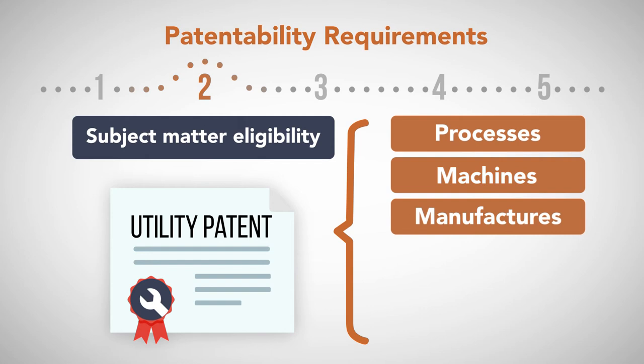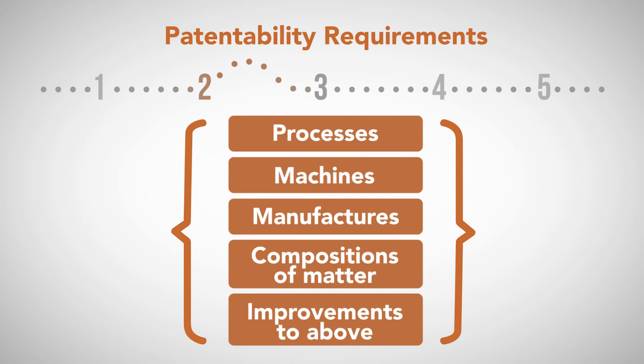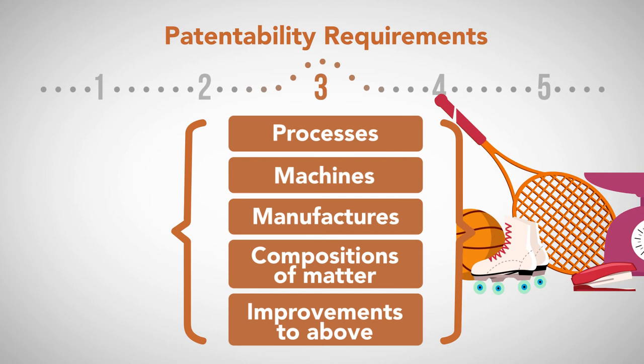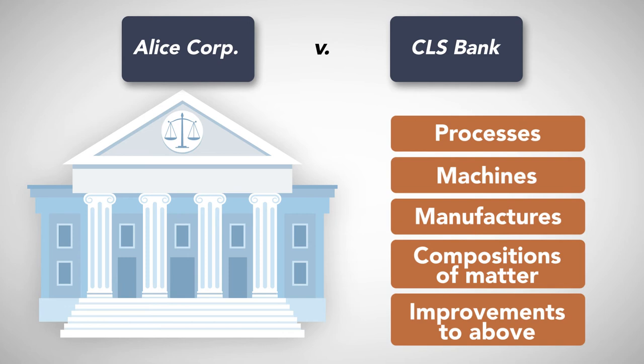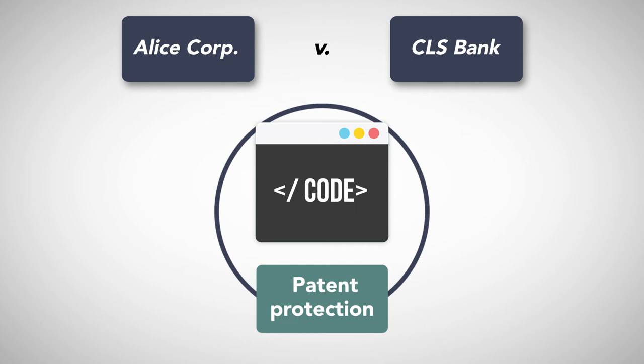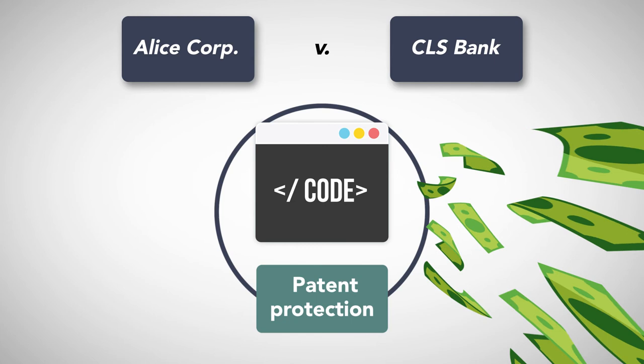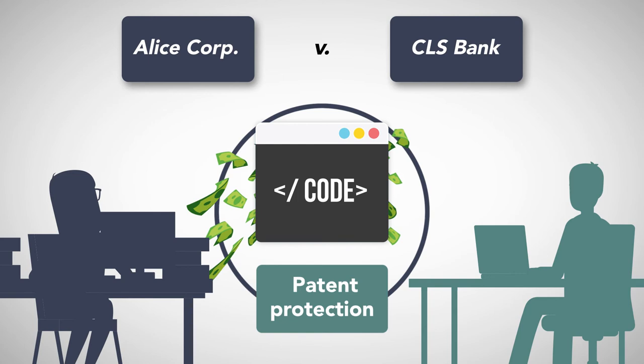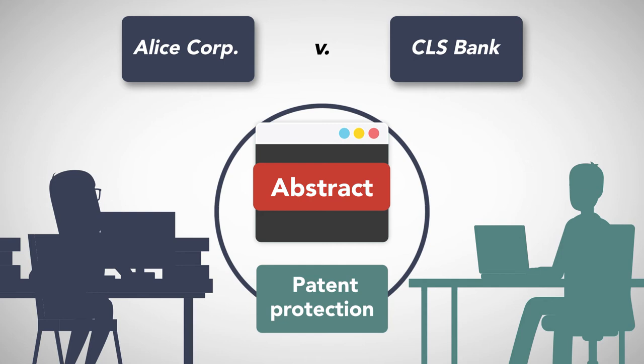For many years, courts read these categories so broadly that almost anything new and useful could be patented. This all changed when the Supreme Court issued its Alice Corp v. CLS Bank decision in 2014. In that case, the Supreme Court significantly limited the scope of patent protection for certain abstract concepts, including many computer software-related ideas. The case addressed patent claims covering a computerized trading platform handling financial transactions in which a third party settles obligations between two others so as to eliminate settlement risk. The court ruled that this was an abstract concept, and that the patent claims did no more than require a generic computer to implement the abstract concept.